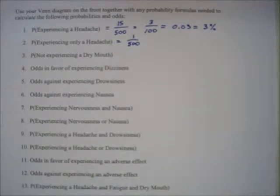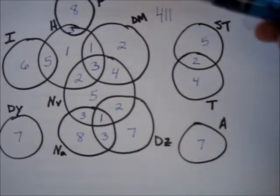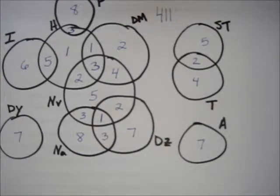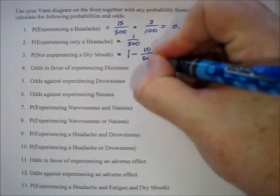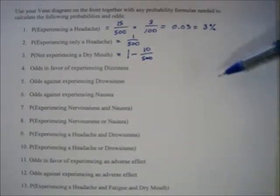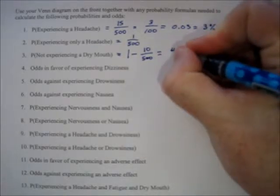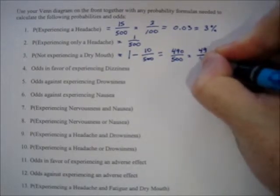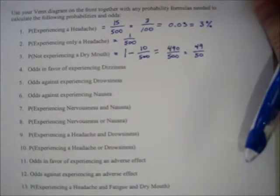Problem 3: the probability of not experiencing dry mouth. Going back to the chart, looking for dry mouth — we add up the numbers inside that circle and get 10. So 10 people experienced dry mouth. The probability of not experiencing it is 1 minus the probability of it happening: 1 minus 10/500 equals 490/500, which reduces to 49 out of 50.